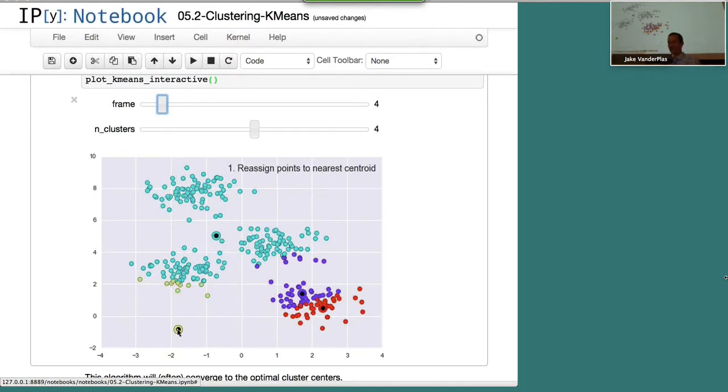We assign all the nearest ones. We compute the mean, move the cluster there, and do it again. We assign the nearest, compute the mean, move, assign the nearest, compute the mean, move. And you can see that as we do this, eventually those cluster centers kind of end up converging. And now none of the points are changing. So we've reached the end of the algorithm and we have our clusters.